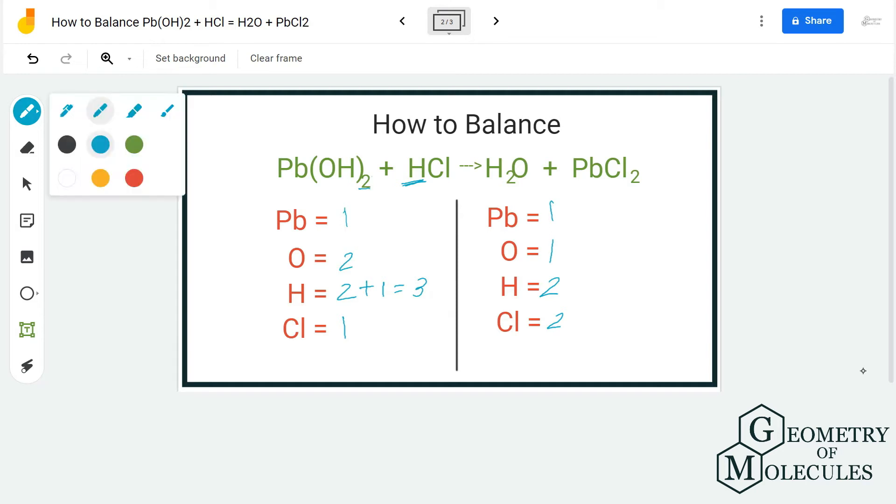As you can see, chlorine atoms there are two on the product side but only one on reactant side. It should be equal on both the sides. So we are going to start balancing by first balancing the chlorine atoms. We are going to add a coefficient 2 here.